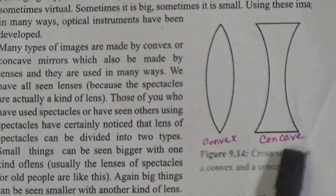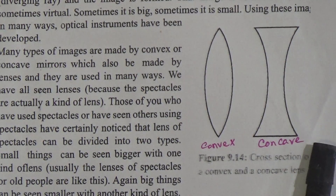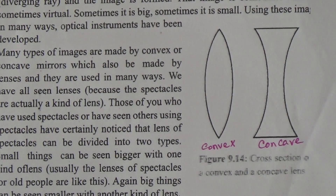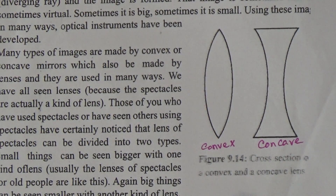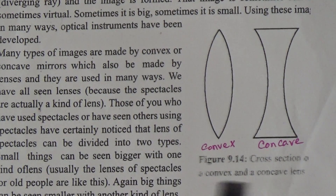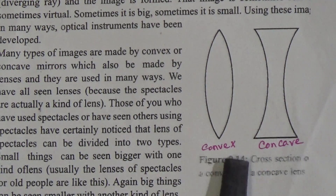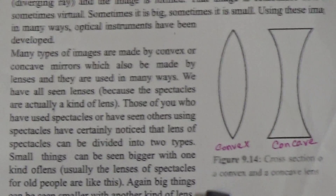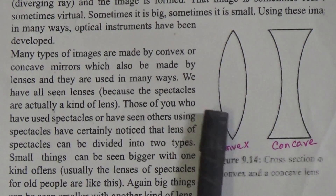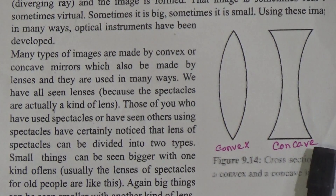There are two kinds of lens: convex lens and concave lens. In Chapter 8, we have already learned about mirror — there are two kinds of mirror, concave mirror and convex mirror. And in this chapter also, lenses have two kinds: convex lens and concave lens.